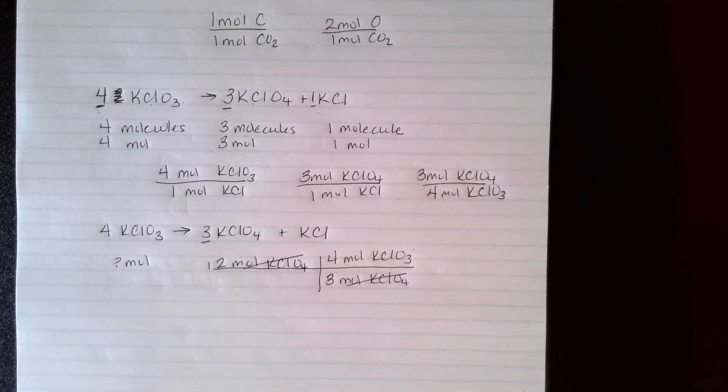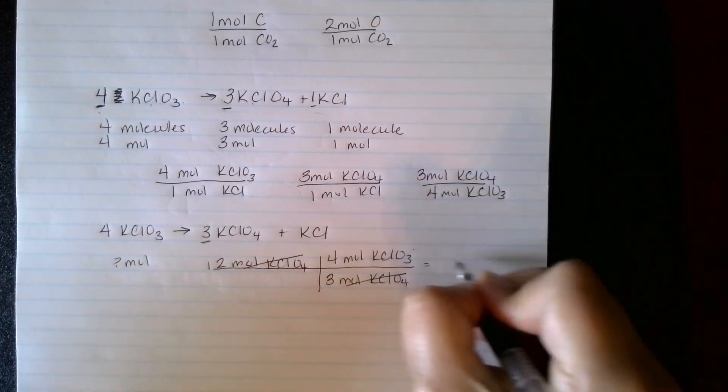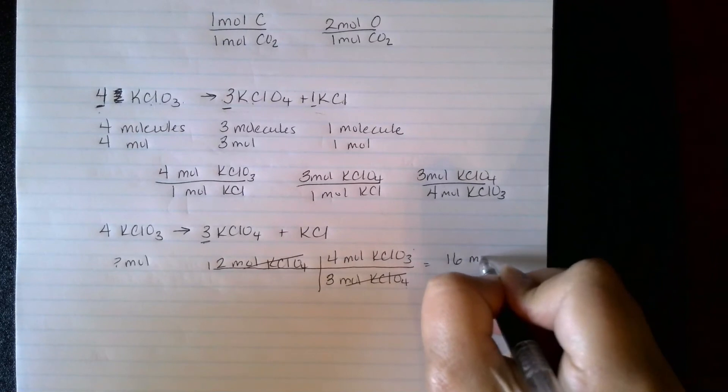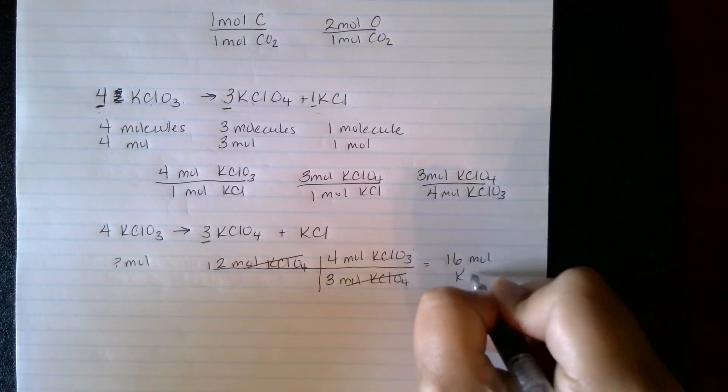So now if I take 12 times 4, and then I would divide by 3, and I would find that I'm going to have to have 16 moles of the KClO3.